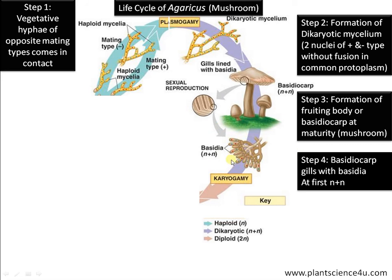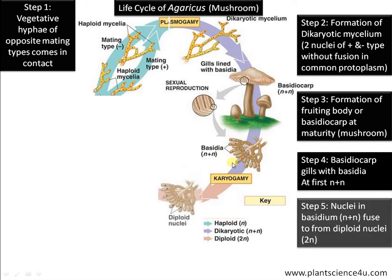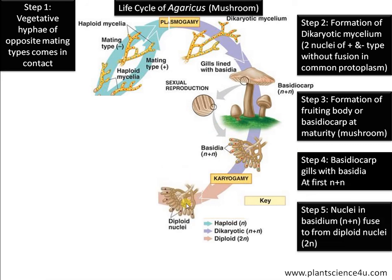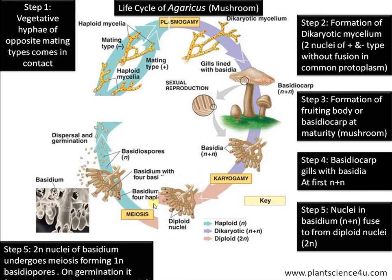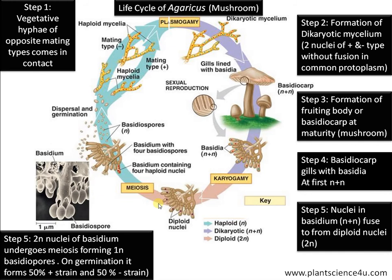At first, the basidium is dicharyotic — containing two nuclei without fusion. Later, these nuclei fuse to form a diploid nucleus inside the basidium. These diploid nuclei then undergo meiosis, forming four haploid nuclei that later transform into basidiospores.